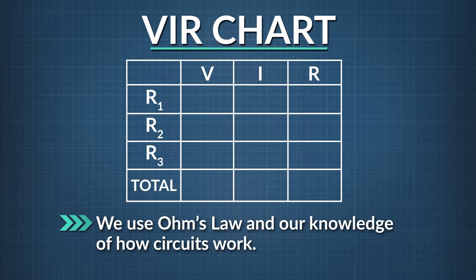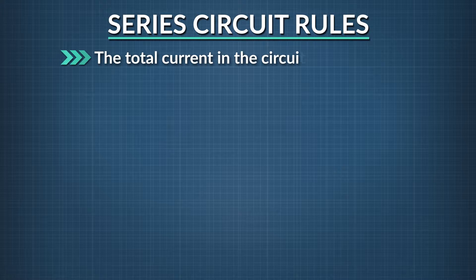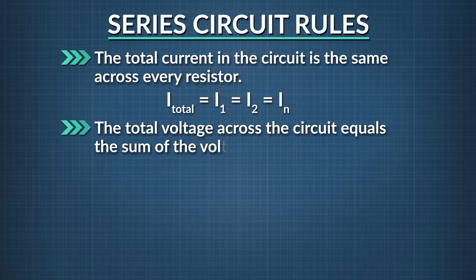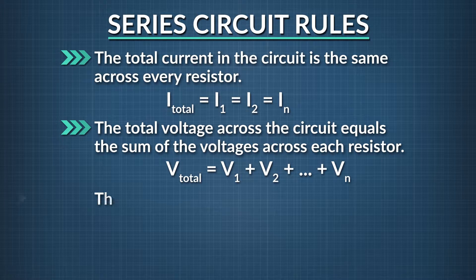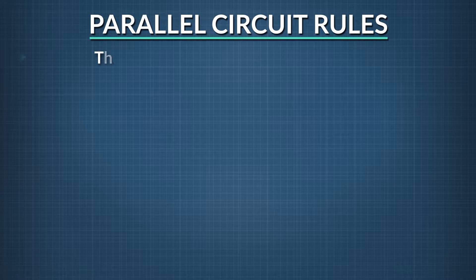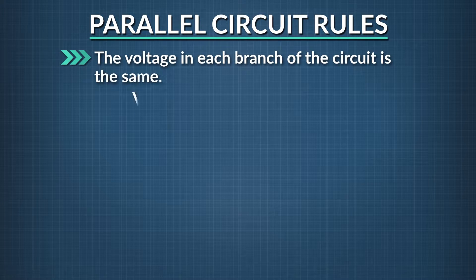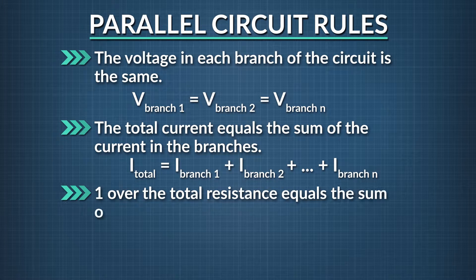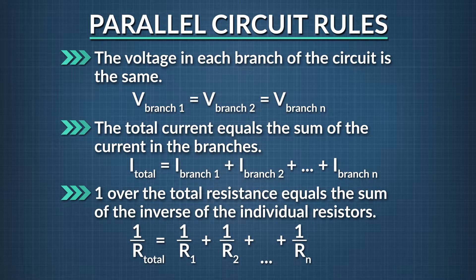Before we get practice using VIR charts to solve circuits, let's remember some of the rules about series and parallel circuits. In a series circuit, the total current is the same across every resistor, and the total voltage across the circuit equals the sum of the voltages across each resistor. Also, the total resistance equals the sum of the individual resistors. In a parallel circuit, the voltage in each branch is the same, while the total current equals the sum of the current in the branches. Resistors add inversely, so 1 over the total resistance equals the sum of the inverse of the individual resistors.